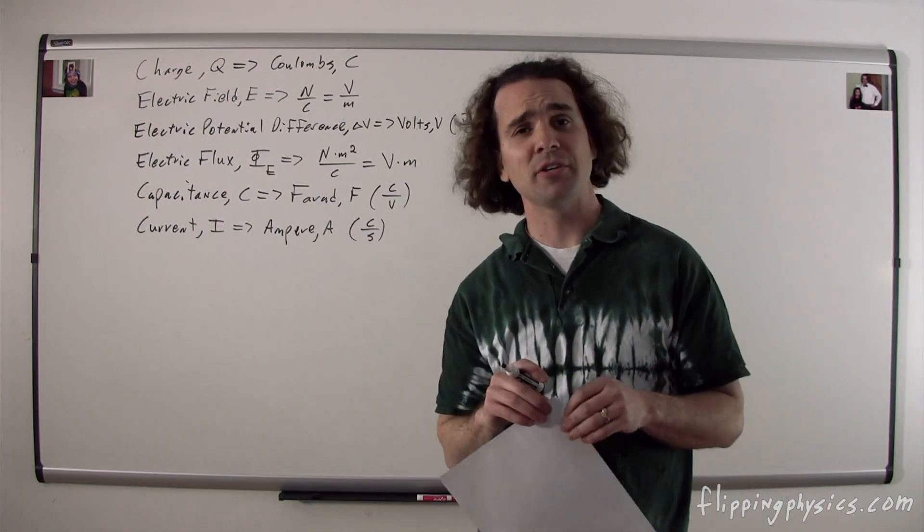Bobby, what are the dimensions for resistance? The dimensions for resistance are ohms, and the symbol for an ohm is an upside-down horseshoe — I know it's upside down because all the luck has fallen out of it and it can hold soup. Well, it can't hold soup, which I guess is unlucky. An ohm is a volt per amp.